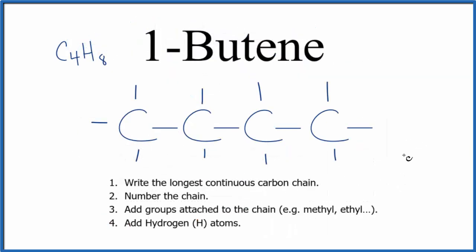Here's our four-carbon chain. This is butane, because this is an alkane — we only have single bonds. Remember, butene is going to have a double bond, and that double bond is going to go on the first carbon. We can't put it at the end, because all of those lines go to hydrogen atoms, and hydrogens can only have one bond.